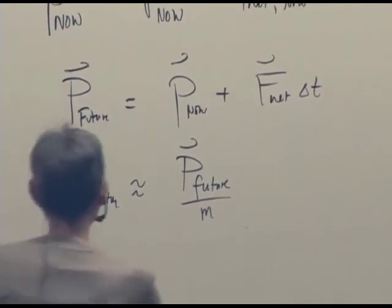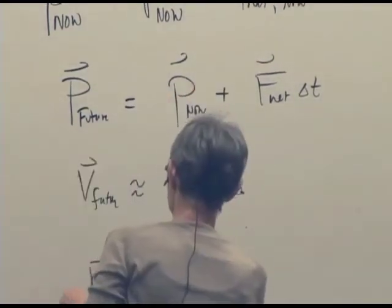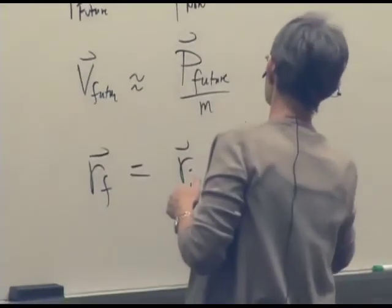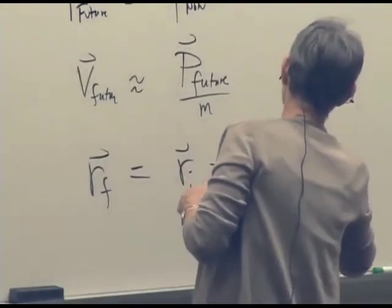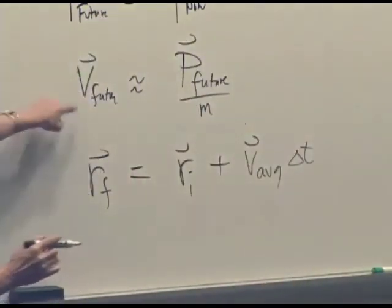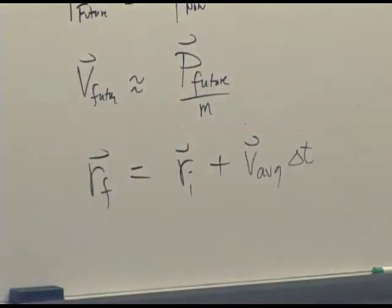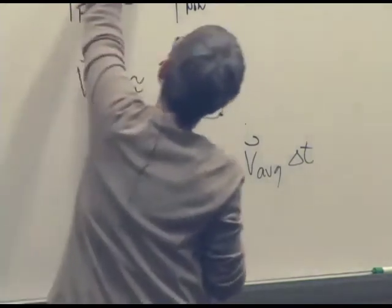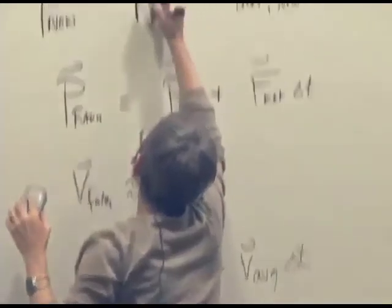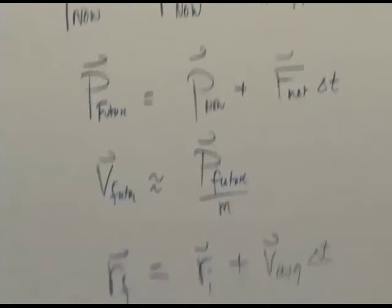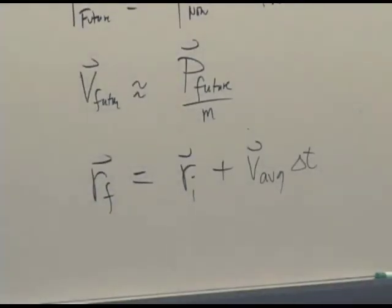And now we can use the position update formula. The final position is the initial position plus V average delta T. But wait a minute. What number do we use for the average? Yes. That is an R. So what do we do for V average though?